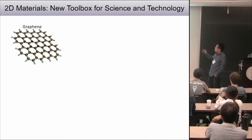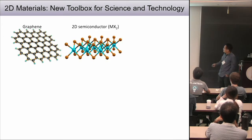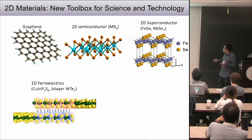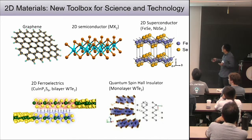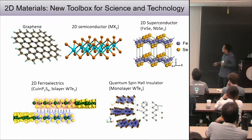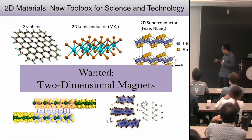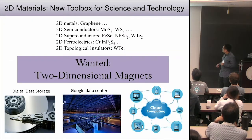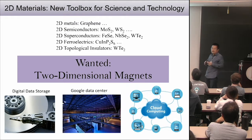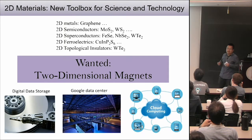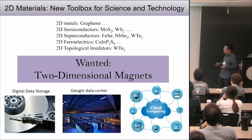Today I'm going to talk about 2D materials. You've probably heard a lot already this week. 2D materials have a broad range of physical properties: from graphene as a semi-metal, we can have semiconductors, superconductors, ferroelectrics, and quantum spin Hall insulators. Starting from several years ago, when I looked at these material systems, I realized something was missing — two-dimensional magnets. This is important not only to complete the toolbox of 2D materials, but also for potential applications in data storage, data centers, and cloud computing.